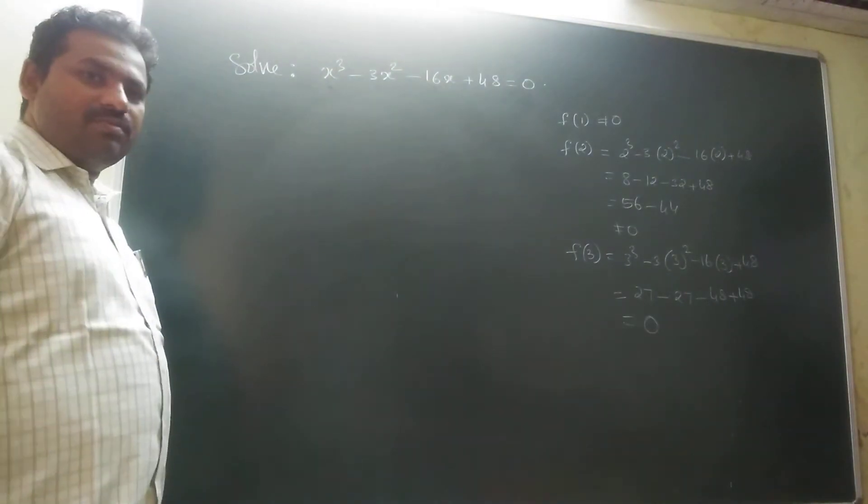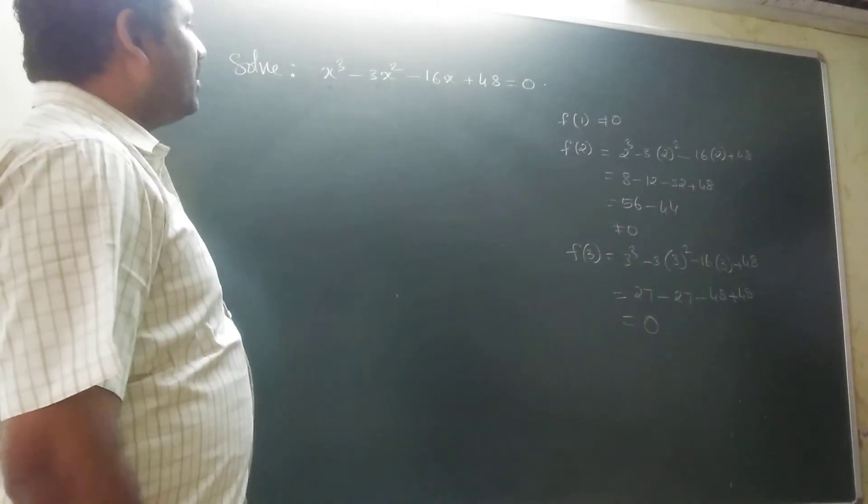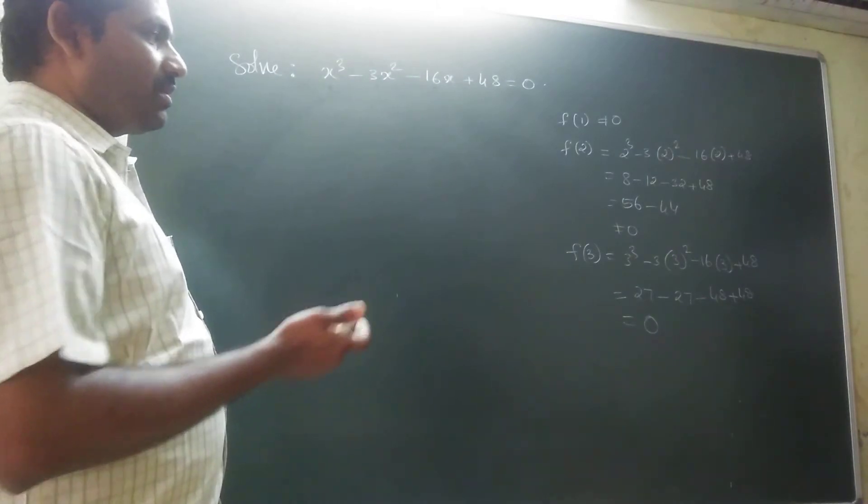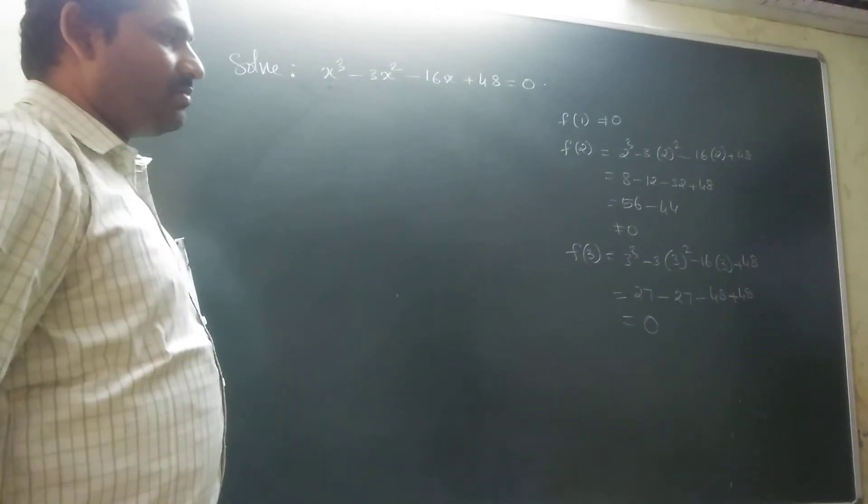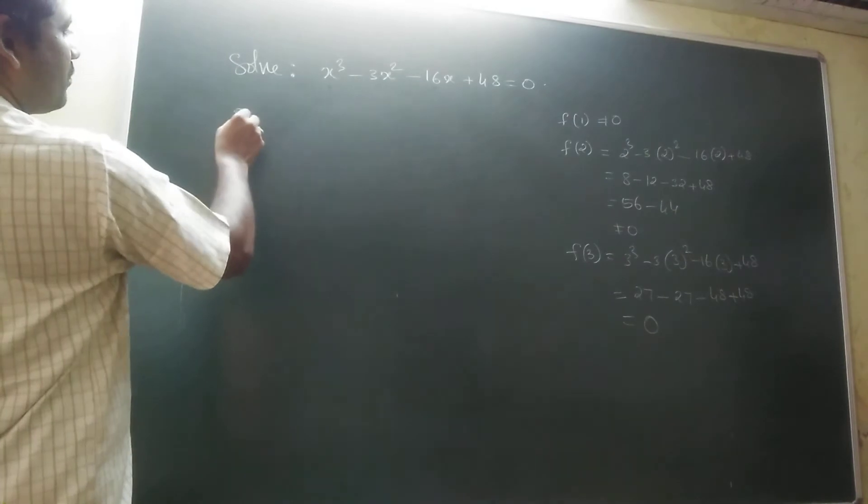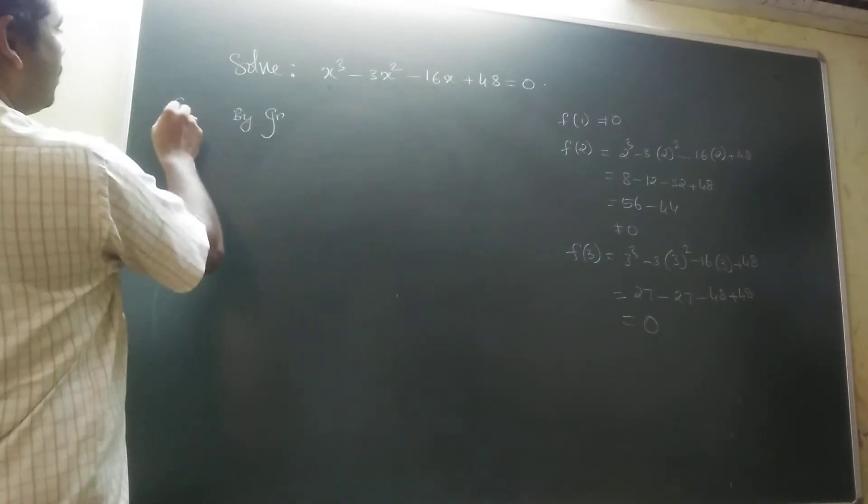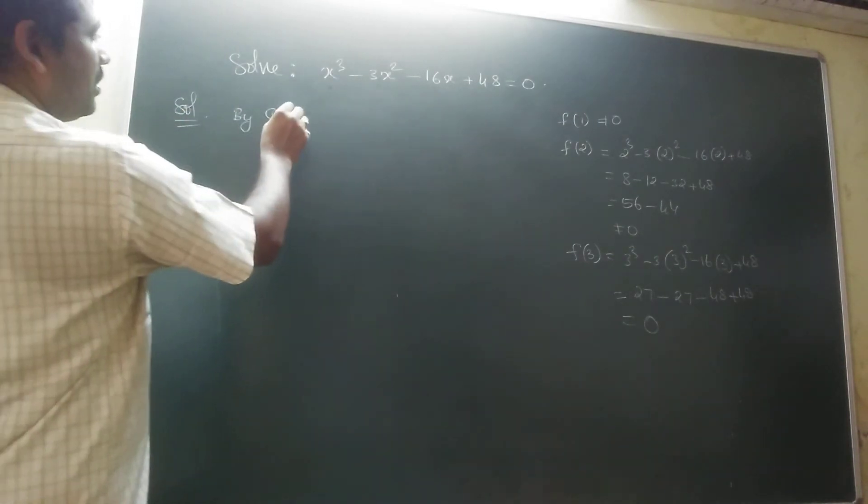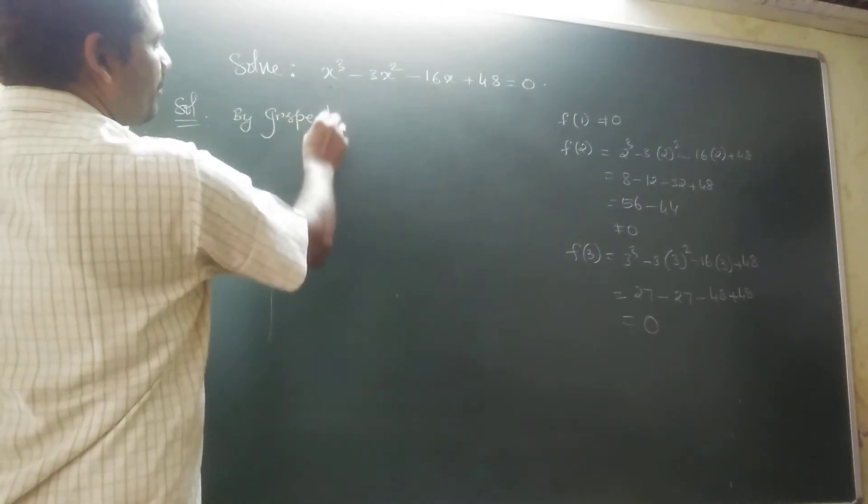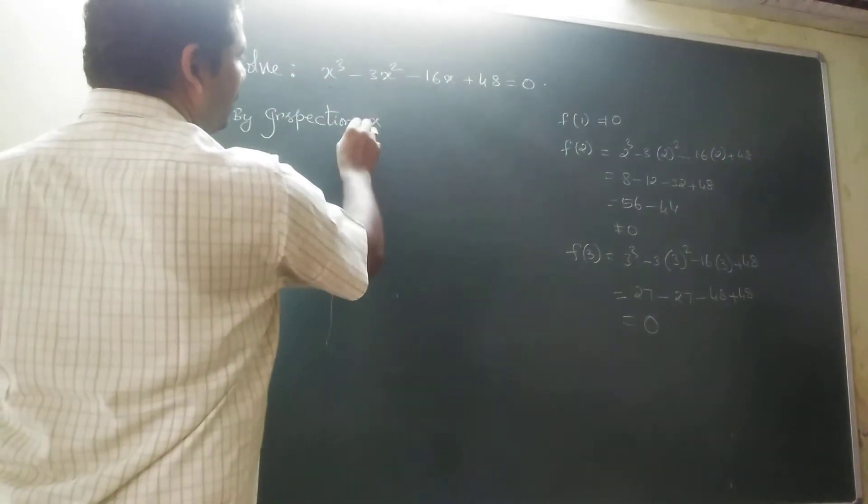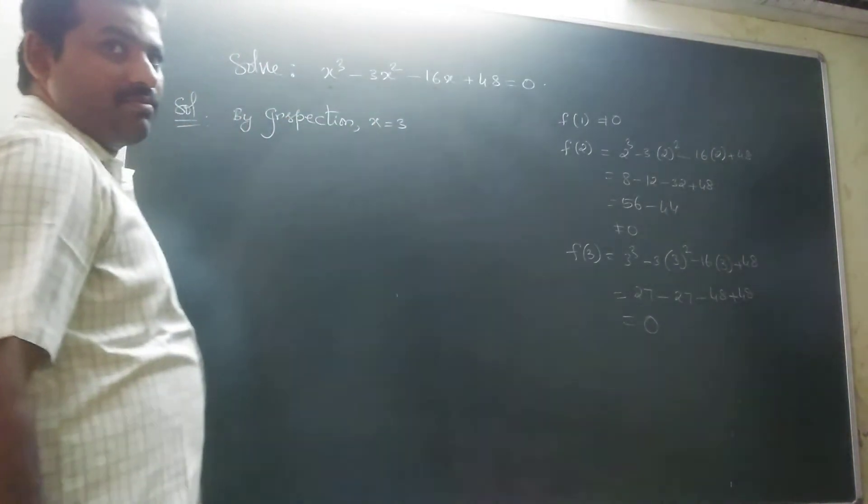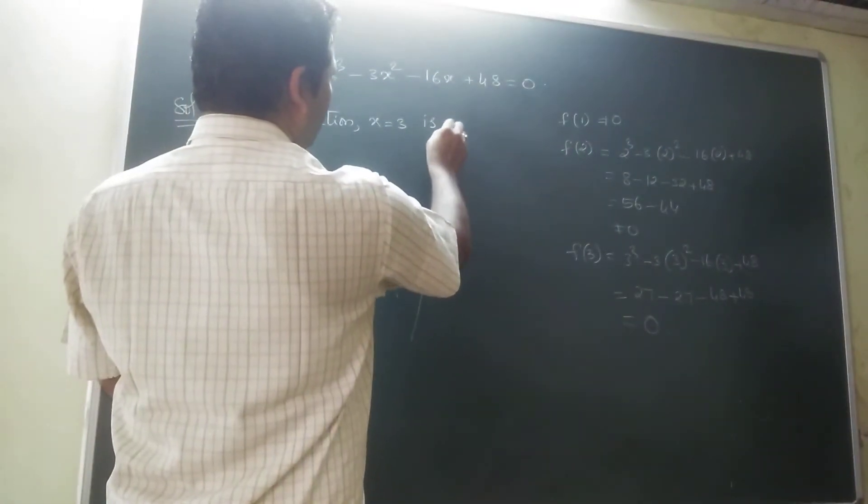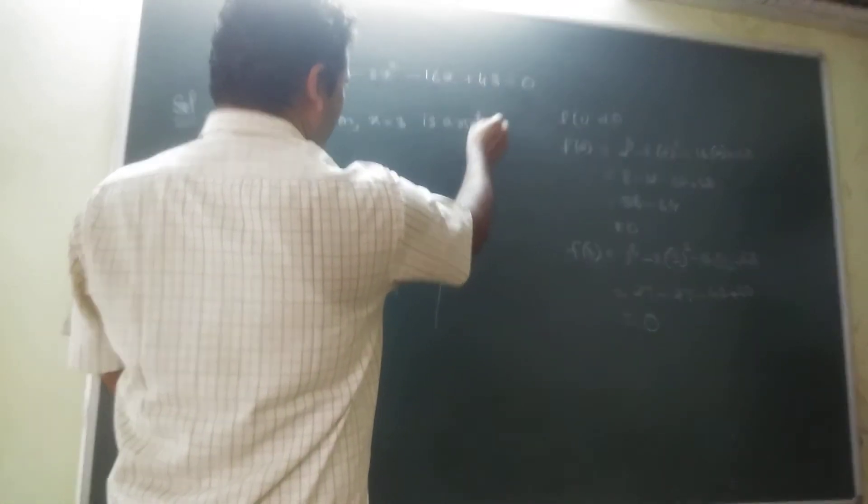So now we get one root. This is the way by putting x equal to 1, 2, 3, minus 1, minus 2, minus 3, like that we get one root. So by inspection, x equal to 3 is a root.